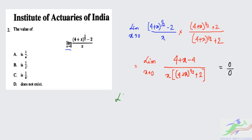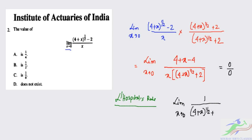Applying L'Hôpital's rule, the expression simplifies to: limit as x tends to 0 of 1 divided by (√(4 + x) + 2). Calculating the limit by substituting x = 0 gives 1/(2 + 2) = 1/4. So the value of the limit is 1/4, and the correct option is option A.